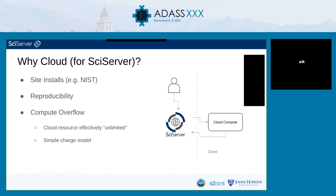Another thing we've been thinking about is compute overflow. In the cloud, compute resources are essentially unlimited in effect. Particularly large computations that we can't host on our limited site could potentially be run there. A side effect is that you potentially have a simpler charge model — instead of complicated arrangements with researchers or other universities, going to the cloud for compute overflow could mean users use their own account, pay for it on their own, and we don't even deal with billing.